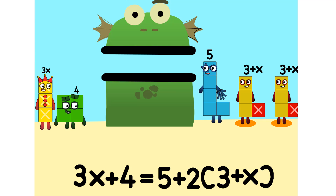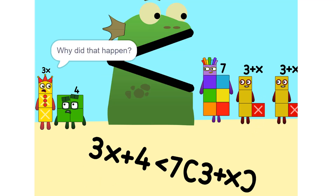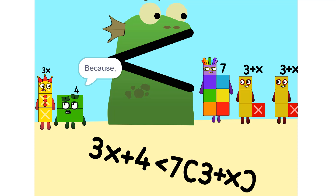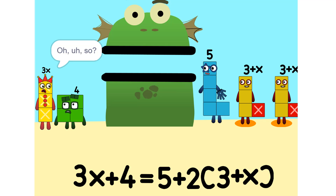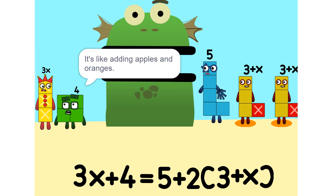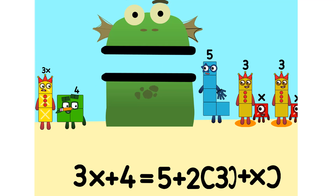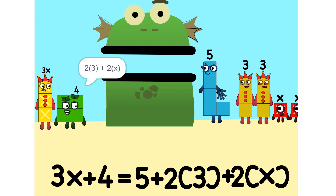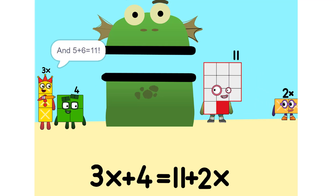I see something — we can add these. Why did that happen? Because the 2 is connected to the 3 plus x. So it's like adding apples and oranges. So what do we do? See the 2 times (3 plus x)? That's the same as 2 times 3 plus 2 times x, which is 6 plus 2x. And 5 plus 6 is 11.